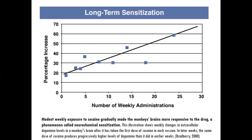We'll also learn about long-term sensitization by looking at what happens in monkey brains when you give cocaine over time. Interestingly, and contrary to what you might think, the same dose produces progressively higher levels of dopamine than in earlier weeks of administration. In other words, you don't need to take more of the drug to have the same dopamine effect. The receptors become sensitized, with more receptors receiving more dopamine — even with the same dose. That's why you need more and more of the dose to achieve the flooding effect.